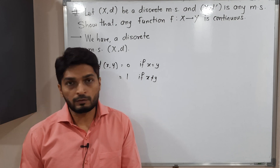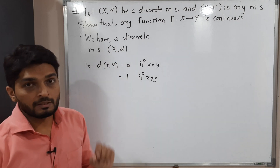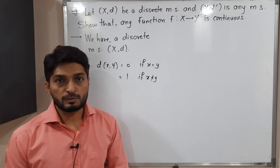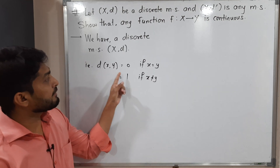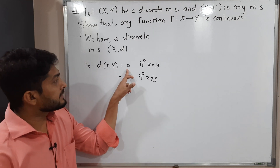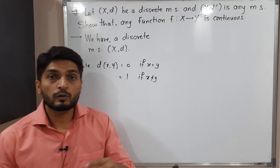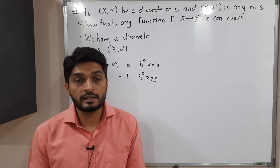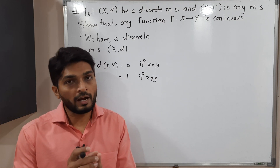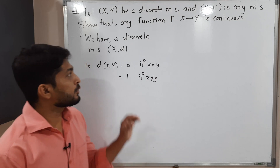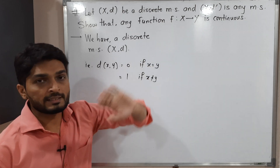We will start with the given information. The given information is that metric space X,d is a discrete metric space. In a discrete metric space, distance is zero if points are equal and distance is one if points are distinct. So in discrete metric space there are only two distances: zero and one. This is the domain we have, and we have to prove that any function f from X to Y is continuous.